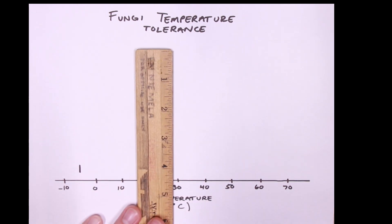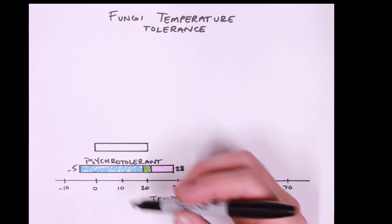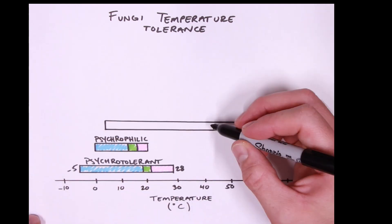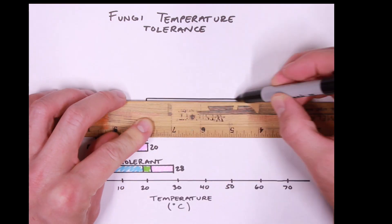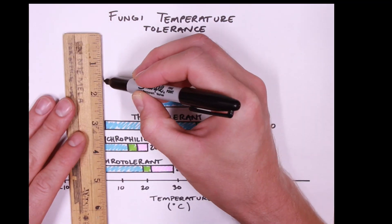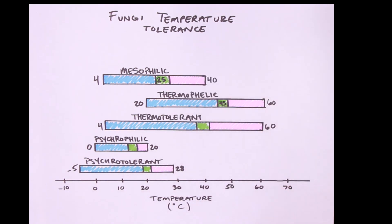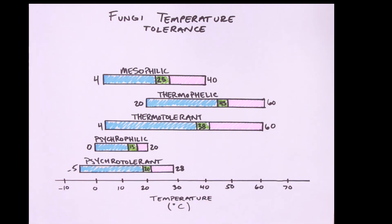Let's take a look at the different groups of temperature tolerance zones that fungi have been grouped into. Psychrotolerant fungi will grow between negative 5 degrees Celsius and 28 degrees Celsius. Psychrophilic fungi will not grow below 0 degrees and will not grow above 20 degrees. Thermotolerant fungi can grow between 4 degrees Celsius and 60 degrees Celsius. Thermophilic fungi will not grow below 20 degrees and will not grow above 60 degrees. And our favorite, the mesophilics, are between 4 and 40 degrees. A mesophilic grows best at about 25 degrees Celsius, thermophilics around 45, thermotolerant at 38, psychrophilics at 15, and psychrotolerant at about 20 degrees Celsius.